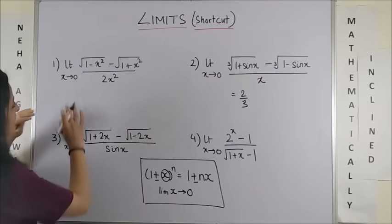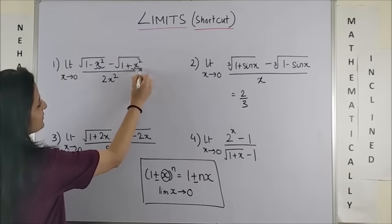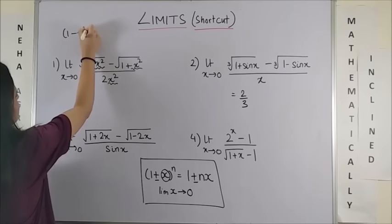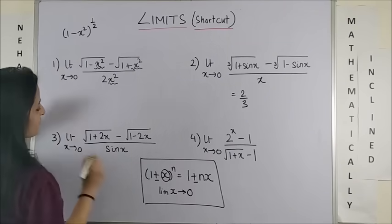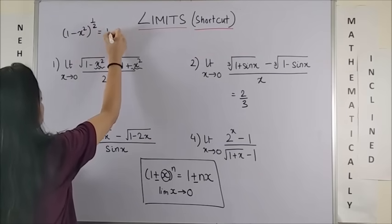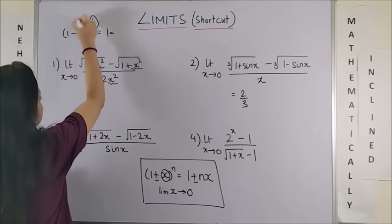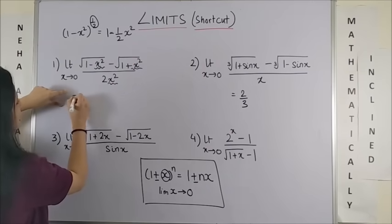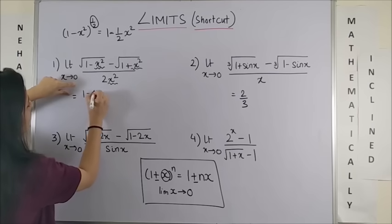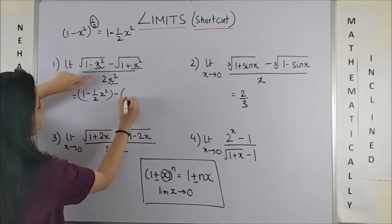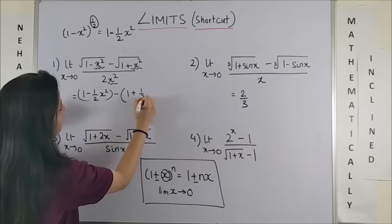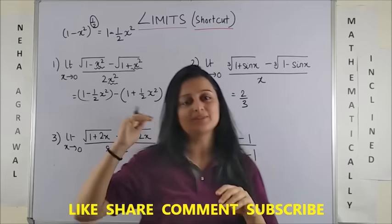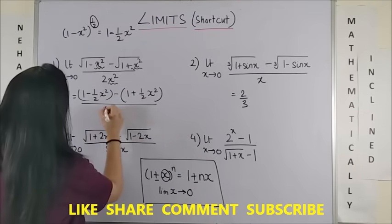Beginning with this one, if you see, all of them are the same x square, x square, x square. And what we do is 1 minus x square raised to power half, going by this logic, can be written as 1 minus n comes inside half of x square. We are exactly going to do this in both the square roots. So this becomes 1 minus half of x square. This becomes 1 plus half of x square.